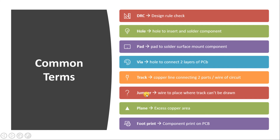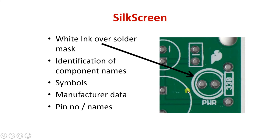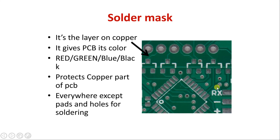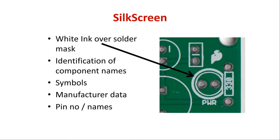Then there can be a jumper — usually in a single-sided PCB where you cannot draw a track between two points, you connect those two points using a wire externally. That is called a jumper. Then there are planes, which are applied onto both the top and bottom side of the PCB. If you notice this shape, this is a plane on the PCB. It is generally connected to ground or VCC — a plane is basically an extra deposition of copper to sink current. Planes are given for VCC or ground potential in a DC circuit, or simply to improve the look of the PCB, in which case the planes are not connected to either VCC or ground.